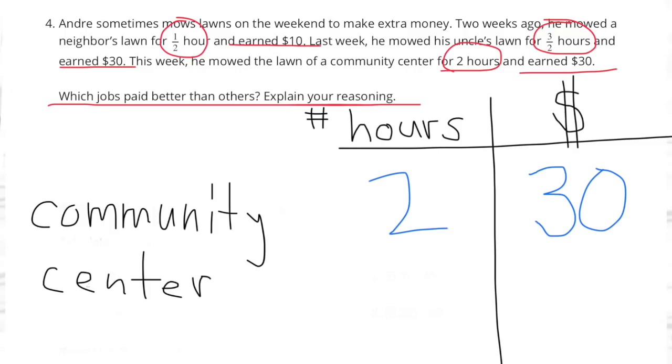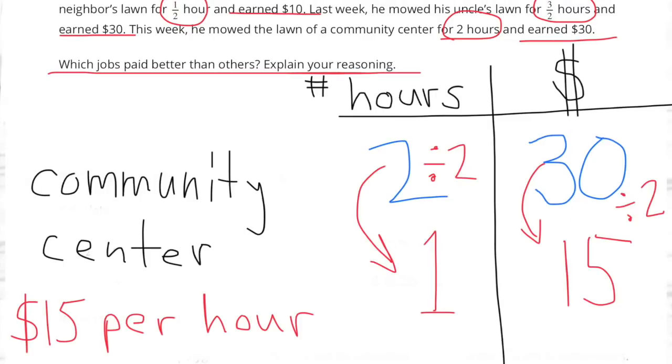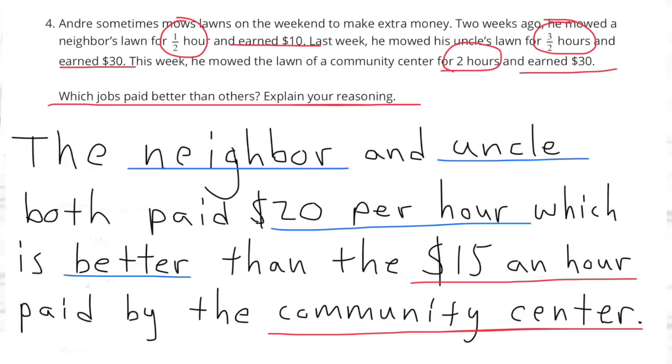The community center, he spent two hours mowing it and was paid $30. Divide the two hours by two and you get one hour. Divide the $30 by two and you get $15. The community center, he was paid $15 for one hour's worth of work. The neighbor and the uncle both paid $20 per hour, which is better than the $15 an hour paid by the community center.